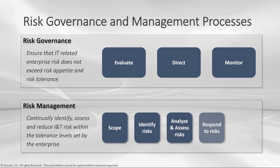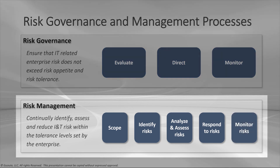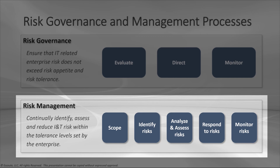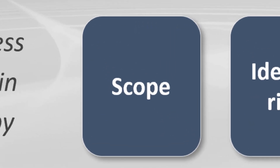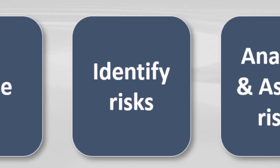On the risk management side, we continually identify, assess, and reduce IT risk within the tolerance levels set by the enterprise. First, we scope the risk — understanding organizational strategies, objectives, core processes, structures, and IT services, infrastructure, and applications. Then we determine the boundaries of the risk universe: are we looking at the enterprise, IT, a project, or a specific technology? Next, we identify risks by establishing a method for collecting risk-related information — the result of which I call a risk scenario.